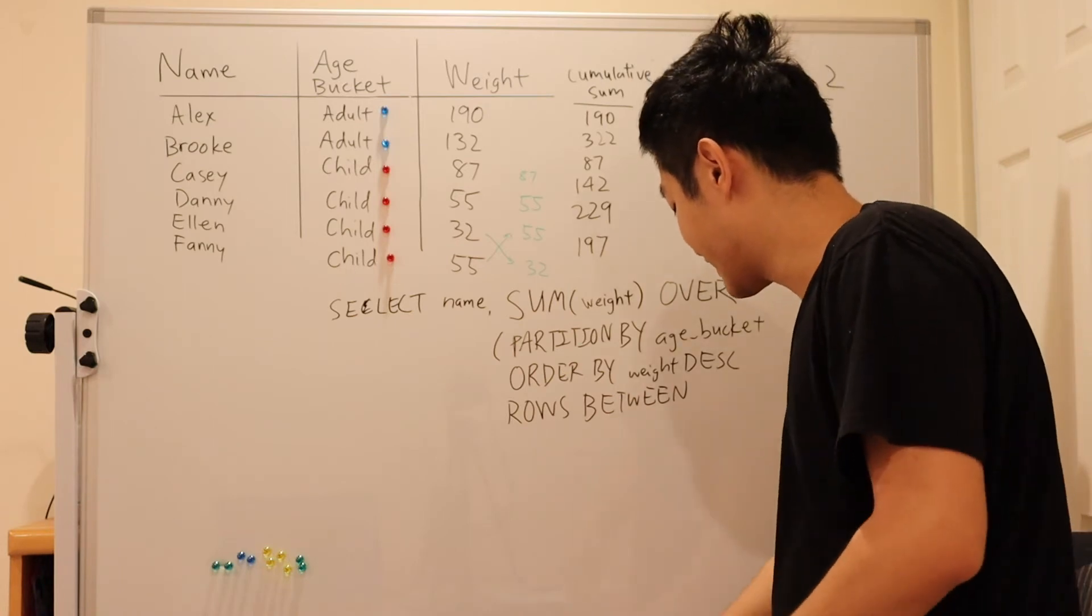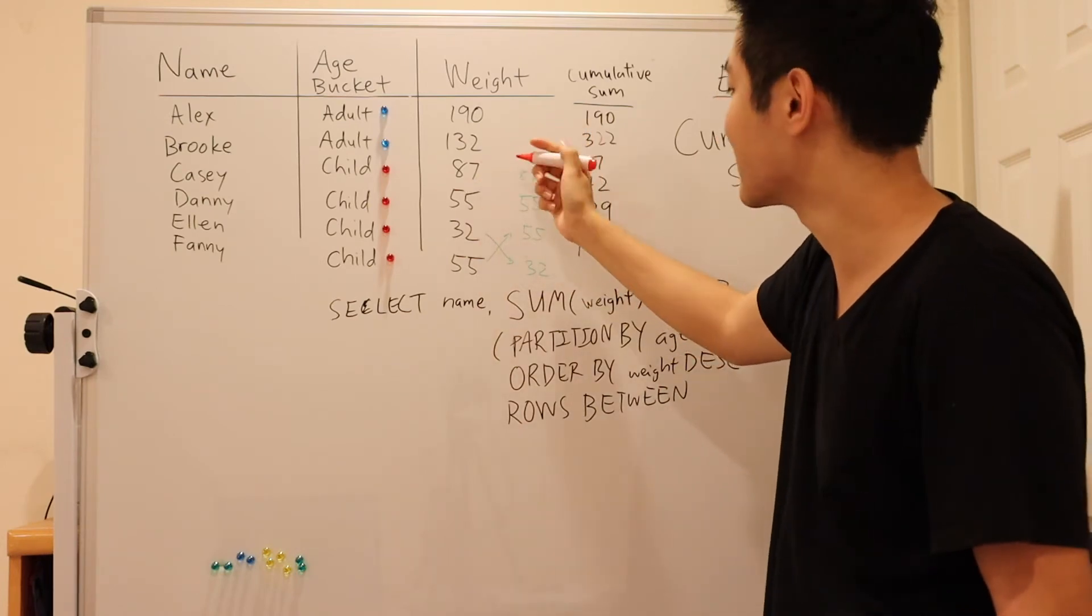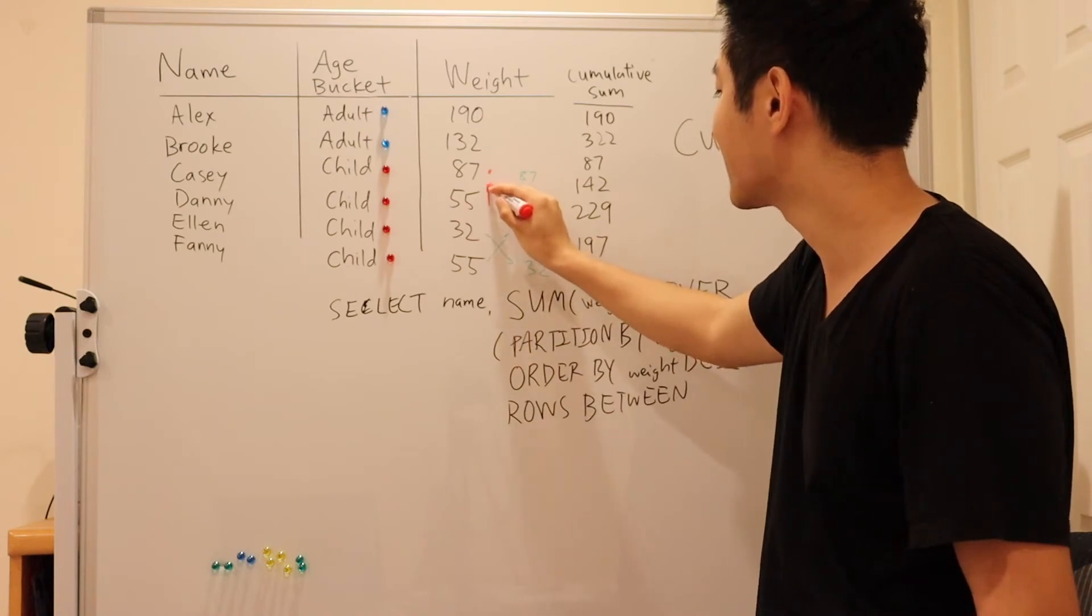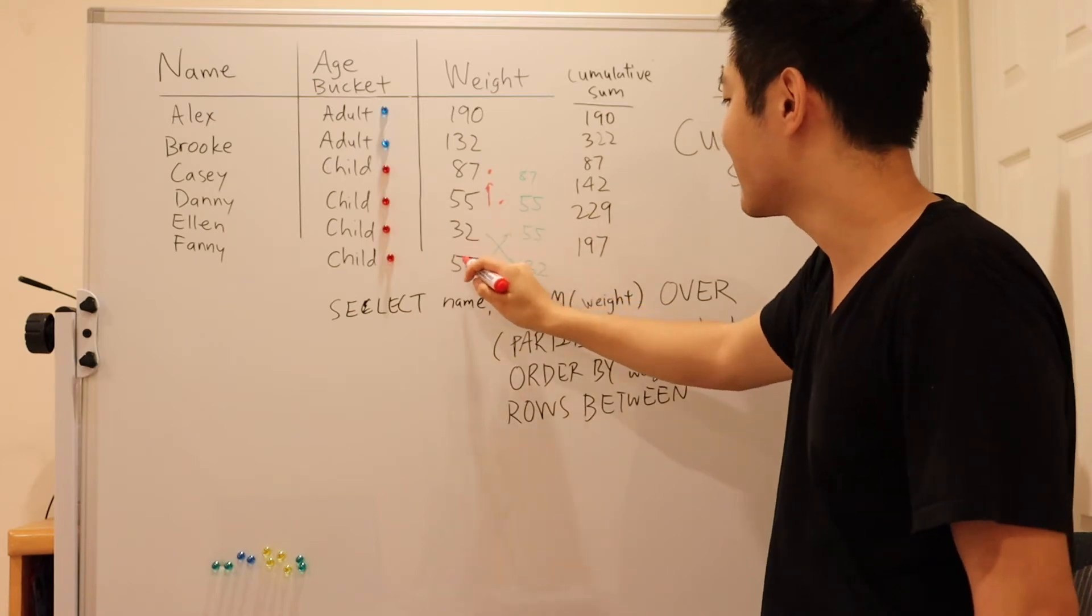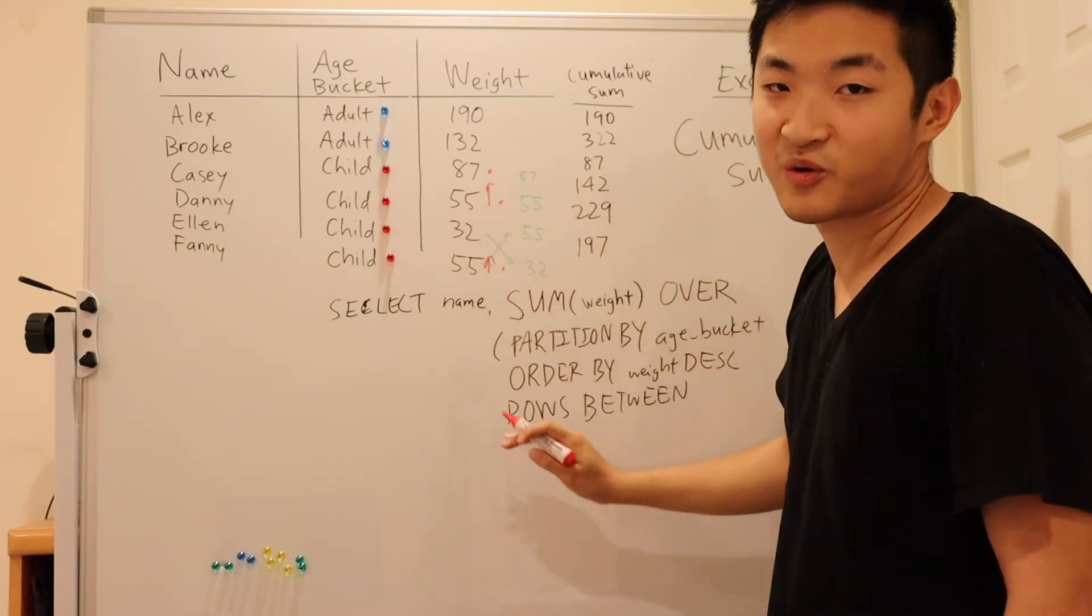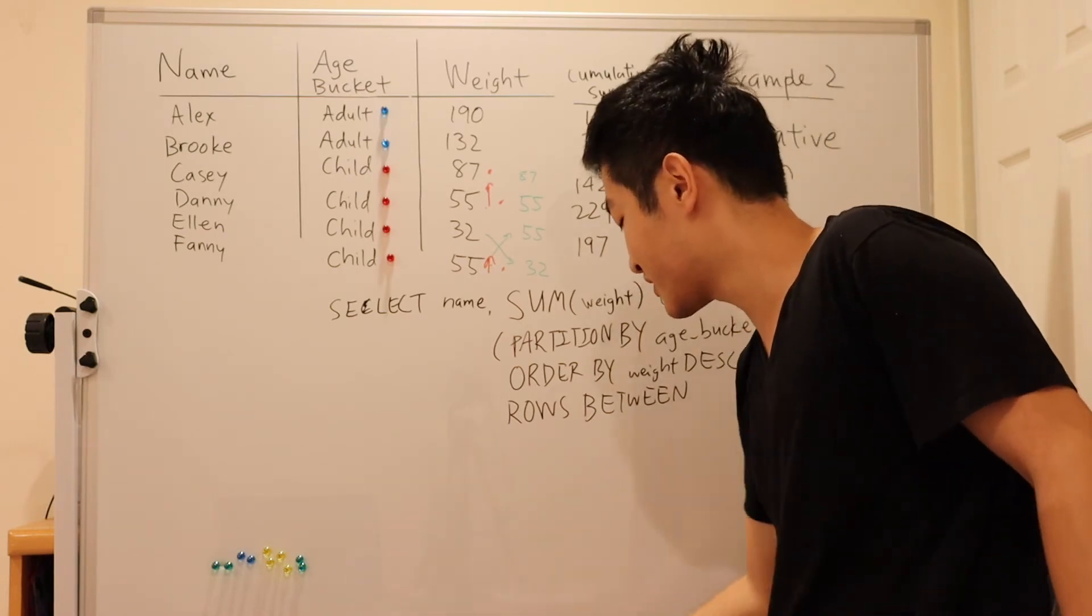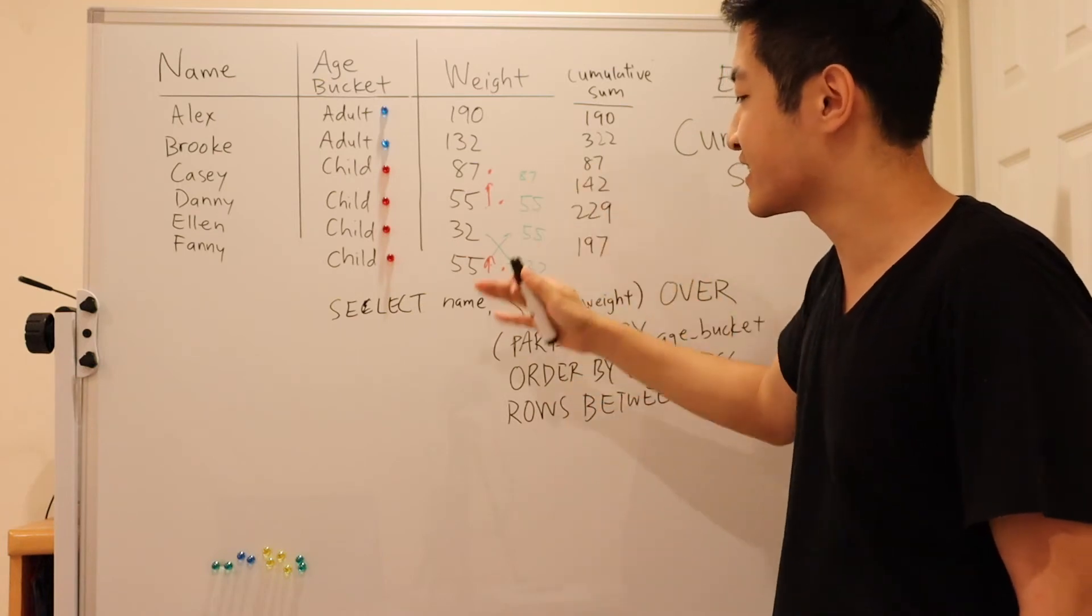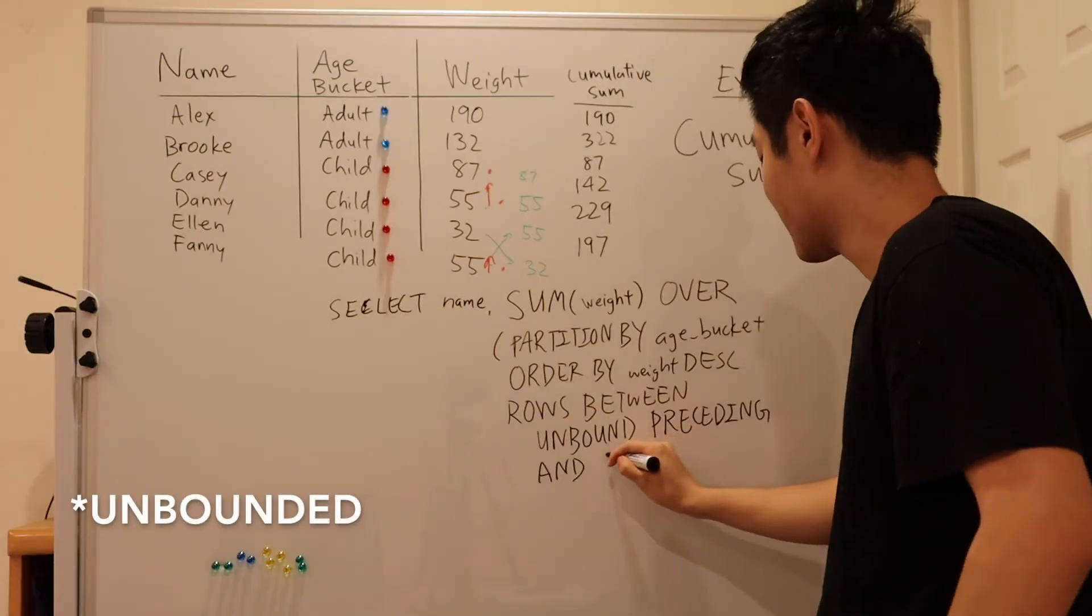So looking at Casey's example, what we'll see is we want the rows preceding Casey, but there's nothing and itself. So for Danny, it's everything preceding Danny and Danny, him or herself. Then Fanny, we want to include Fanny, Danny and Casey. We now see a pattern that we want to follow for every single window here. And the way we specify all rows preceding yourself is to say unbounded preceding and current row.